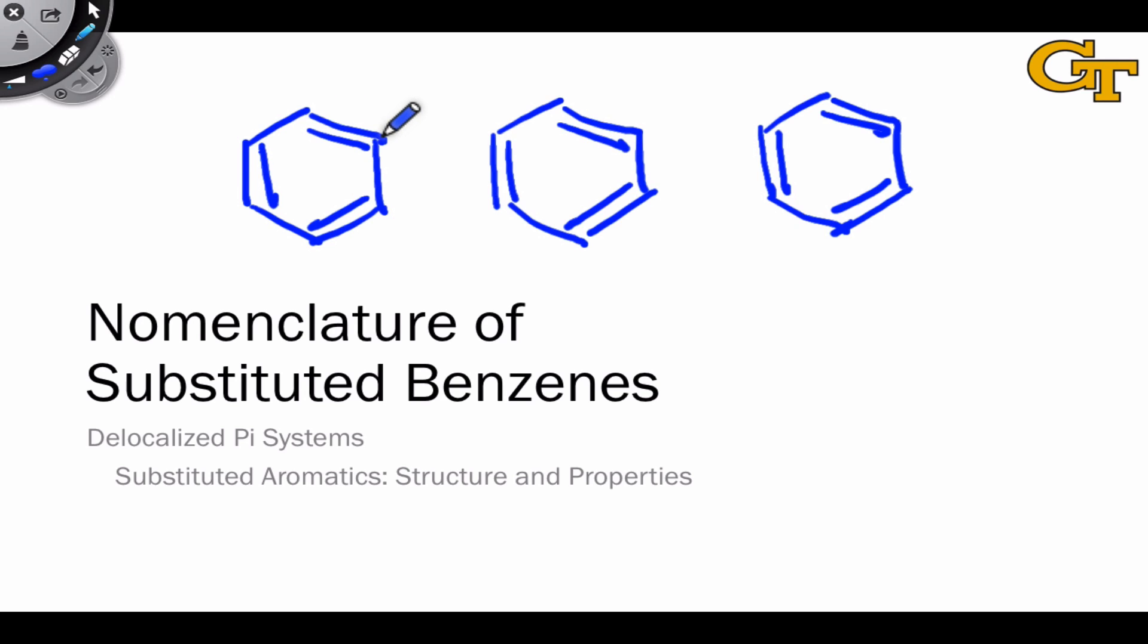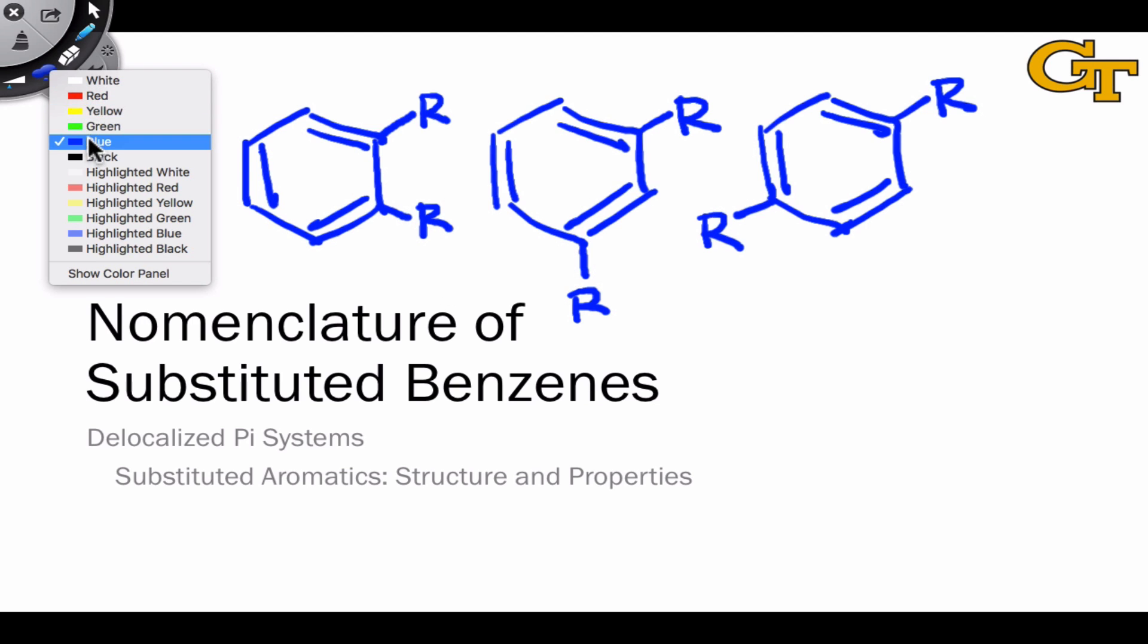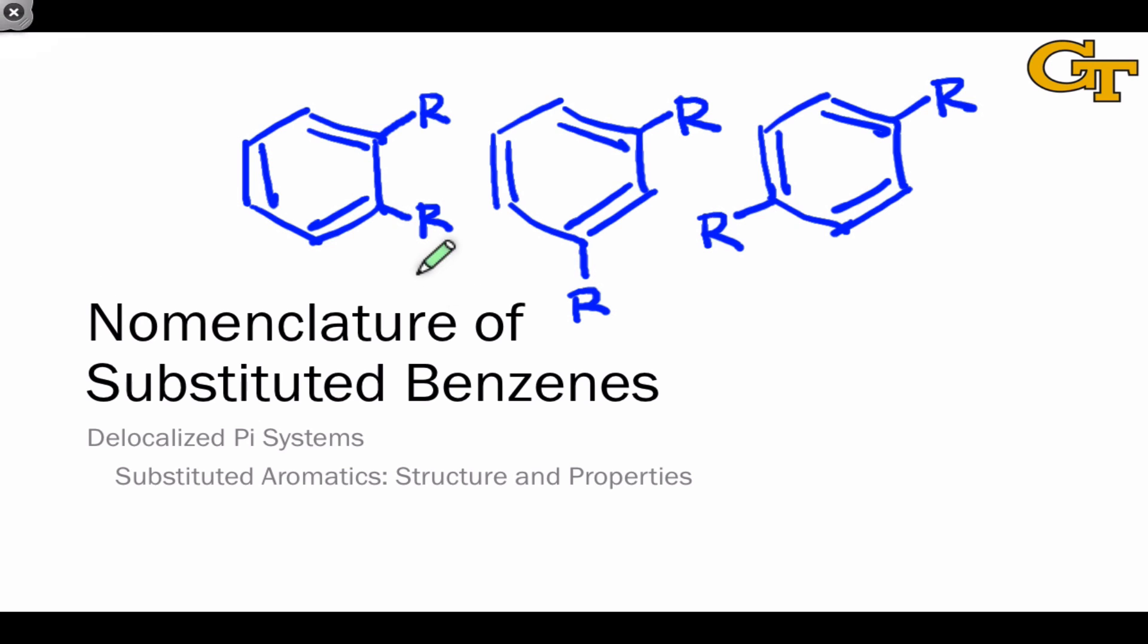There are only three unique ways in which two substituents can be arranged around the carbons of a benzene ring. They can either be in a 1-2 relationship, as I've drawn here, a 1-3 relationship, as I'm drawing here, or a 1-4 relationship, as we're seeing here. Different terms are used to represent these different isomers of a disubstituted or polysubstituted benzene. And we use these same terms to refer to positions relative to a substituent.